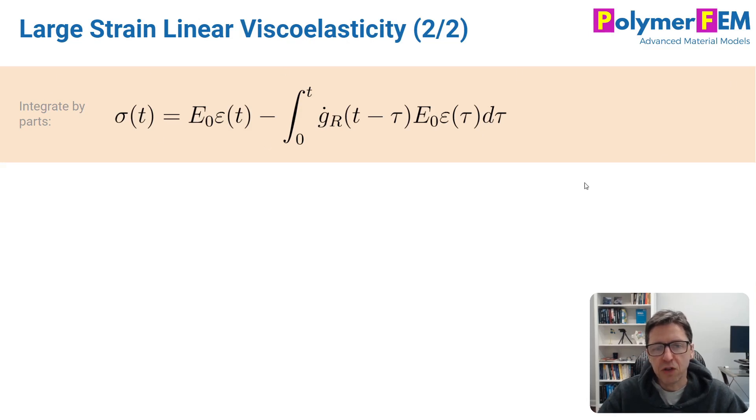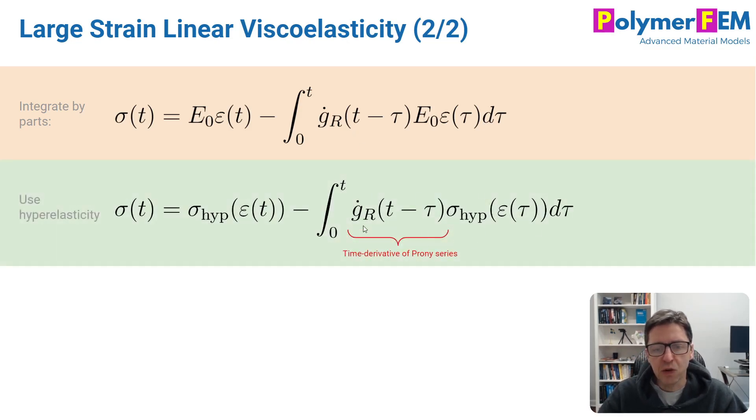Typically when you write large-strain viscoelasticity, you have an instantaneous response and then you have a time integral over a relaxation type of function. It's divided up into a hyperelastic component and a normalized relaxation component. And this is called the prony series.